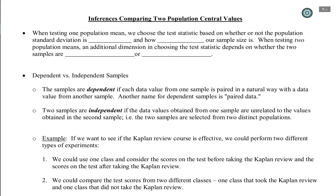Hello. We are considering inferences that allow us to compare two population central values. The motivation for this might be: how does a drug company know if a new drug on the market is better than or as good as the current drug?